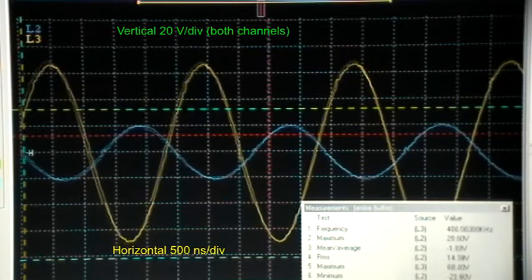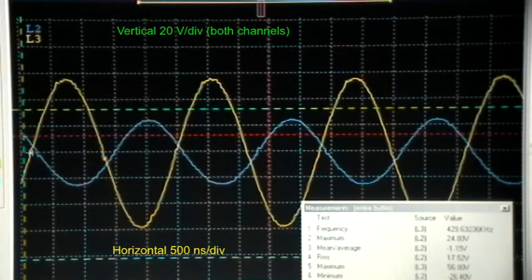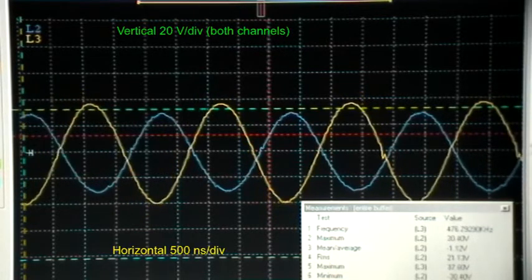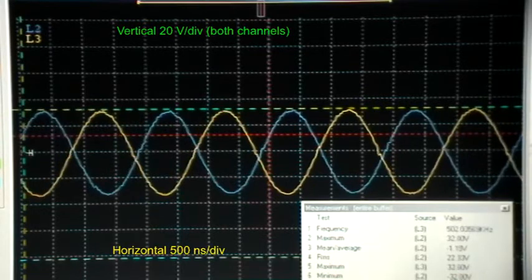And now we're starting to get some phase shift in there. That's 360 kilohertz right there, 375. And now the yellow trace is decreasing in amplitude and the blue trace is increasing in amplitude, and we are almost 180 degrees out of phase now.